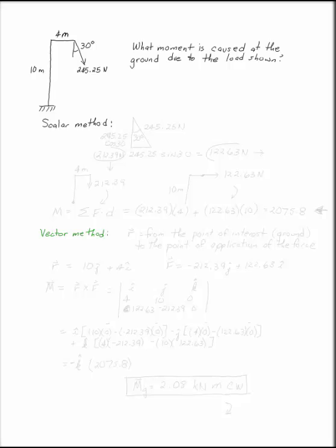If we want to use the scalar method, we can break the 245 newton load up into its component pieces. The hypotenuse will be 245.25 newtons. The legs here will be that force times cosine 30 and times sine 30, which is 122.63 newtons to the right and 212.39 newtons down. So our force is equal to these two components.